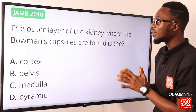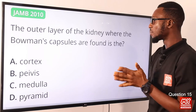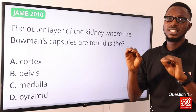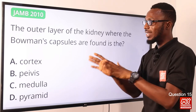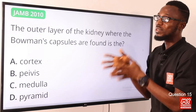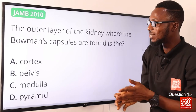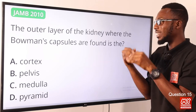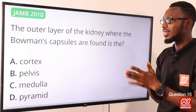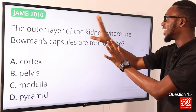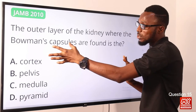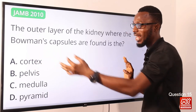Question 15: The outer layer of the kidney where the Bowman's capsules are found is which region? The kidney has two distinct regions: the outer cortex and the inner medulla. The nephron (urinary tubule) is the functional unit of the kidney and begins as a cup-like structure in the cortex called the Bowman's capsule, which opens into the convoluted tubules. Filtration occurs in the cortex. The correct option is option A, the cortex.